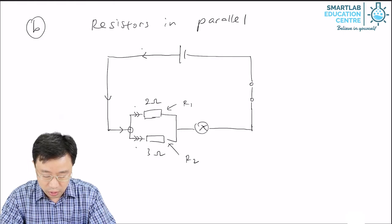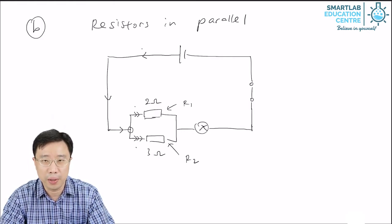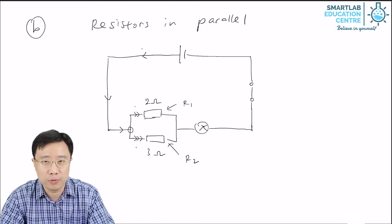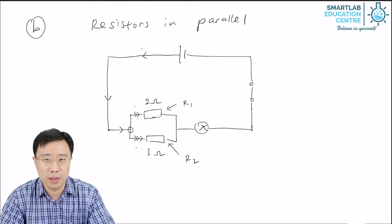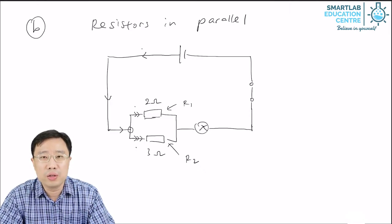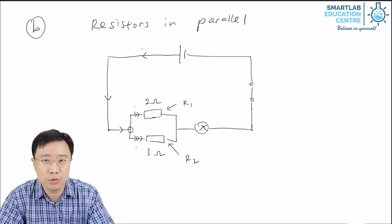Now, so R1 and R2, we say that they are arranged in parallel because the arrangement provides more than one way for current to flow through the arrangement. So how do you find the total resistance for this arrangement of R1 and R2?